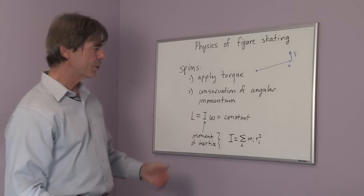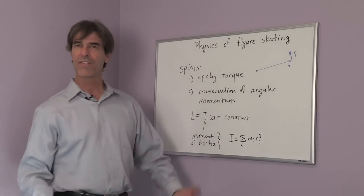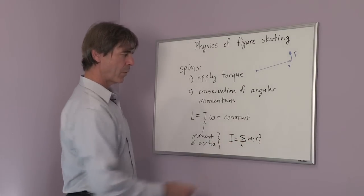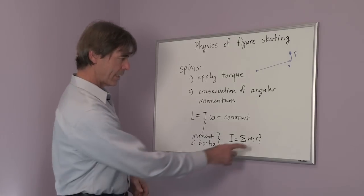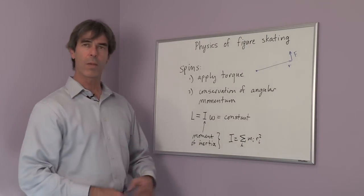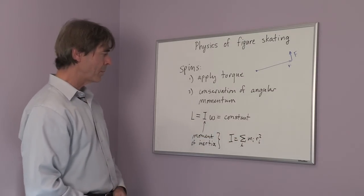The moment of inertia is obtained by taking the mass of every molecule in your body and multiplying it with the distance that molecule is from the spin axis, squaring that distance, and then summing up that over all the molecules. This would give you the moment of inertia.